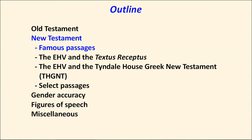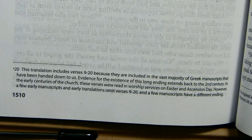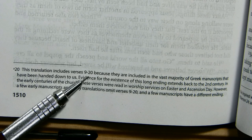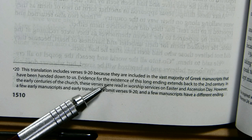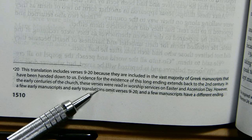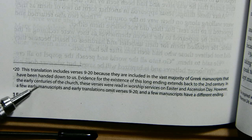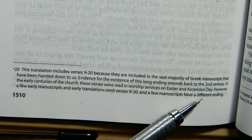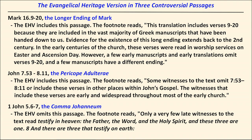Moving to the New Testament, we look at famous passages: the longer ending of Mark, the Pericope Adulterae, and the Comma Johanneum. The EHV includes Mark 16:9-20 because those verses appear in the vast majority of Greek manuscripts, with evidence back to the second century, and they were read in worship services on Easter and Ascension Day. They acknowledge the verses' absence in a few early manuscripts. The EHV also includes the Pericope Adulterae. However, the EHV omits the Comma Johanneum due to lack of evidence, as the footnote states.